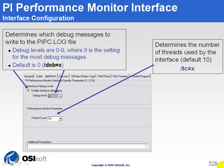What about configuring the interface? Well, in ICU, as this is a standard interface, you can simply configure the general parameters, the point source, the ID number, and the scan classes. In some cases where you're not getting the expected results from some counters, you could go to the PI Performance tab and enable debugging. Depending on the level of debugging you choose, more or less information will be written to the PIPC.log file.